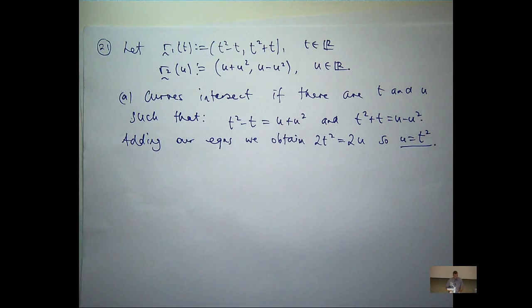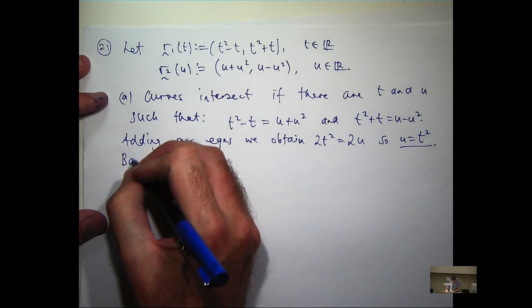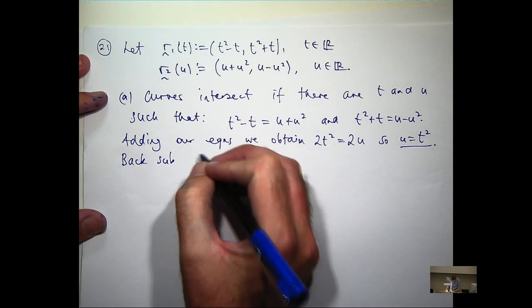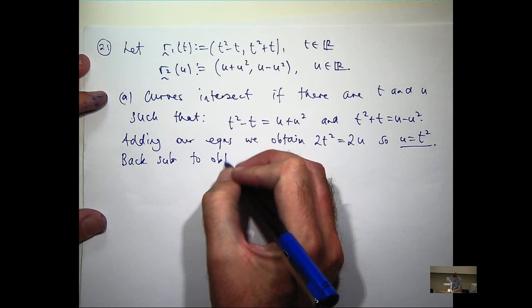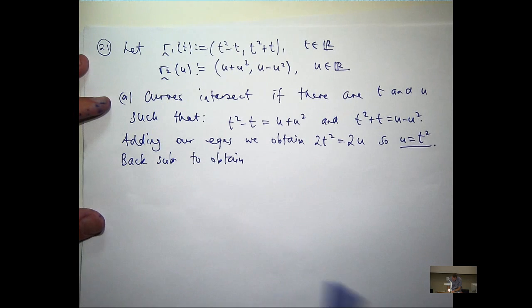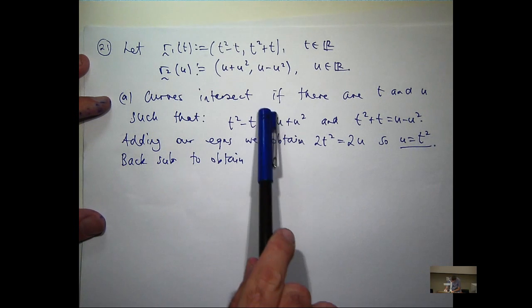What I can do now is back substitute, take that underlined value and back substitute. Okay, so I'm going to take this and back substitute in there for u into this one.